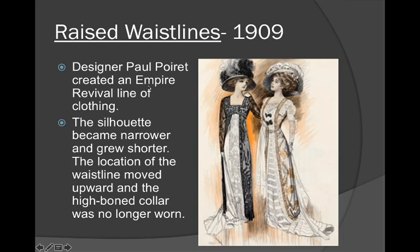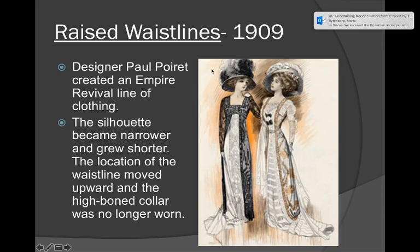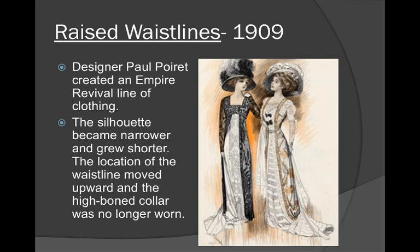In 1909, right before the era ends, we get something called a raised waistline. The designer Paul Poiret created this empire revival clothing line and it became very popular. The silhouette became narrower and grew shorter, the waistline location moved upward, and the high-boned collar was no longer worn. So we have something cinched around the bust rather than at the natural waistline.